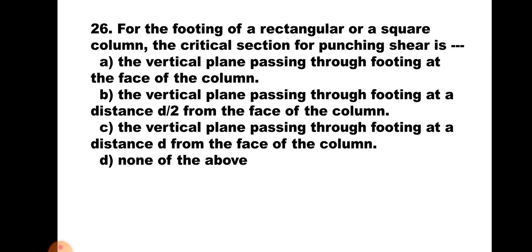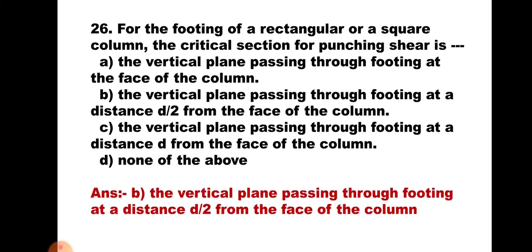Question number 26. For the footing of a rectangular or square column, the critical section for punching shear is: A) the vertical plane at the face of the column, B) at a distance d/2 from the face, C) at a distance d from the face, or D) none of the above. Punching shear means two-way shear. For two-way shear, the critical section is always taken at a distance of d/2 from the face of the column along all four sides. Hence the correct answer is B, the vertical plane passing through the footing at a distance d/2 from the face of the column.